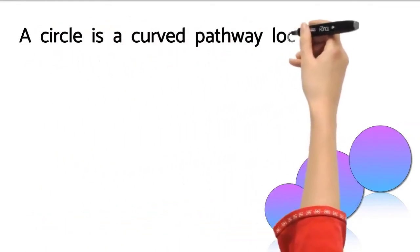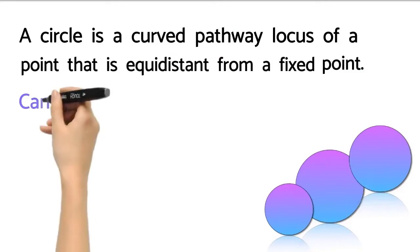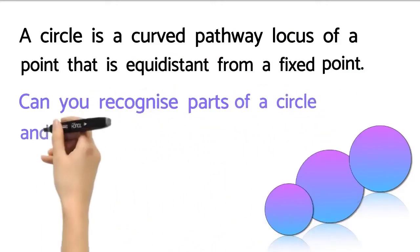A circle is a curved pathway locus of a point that is equidistant from a fixed point. Can you recognize parts of a circle and explain the properties of a circle?